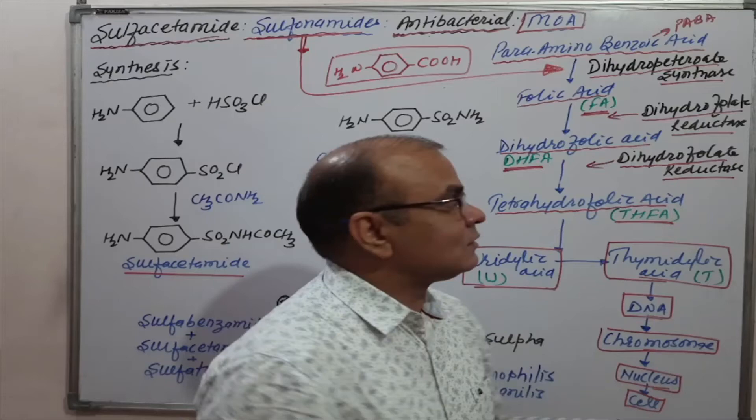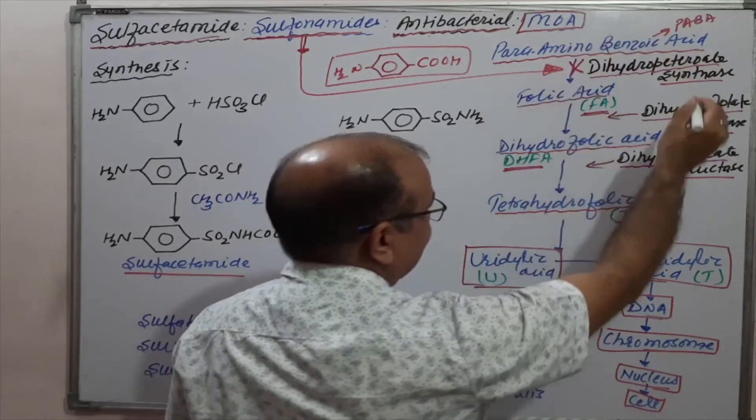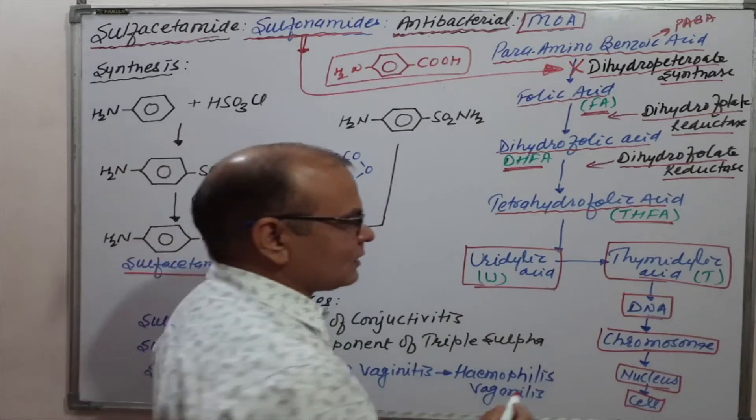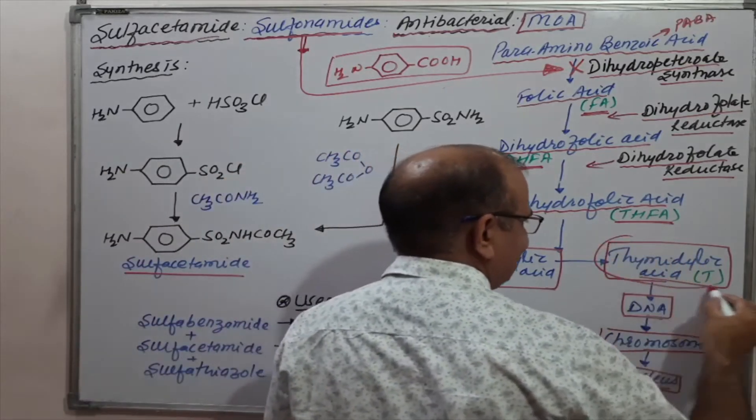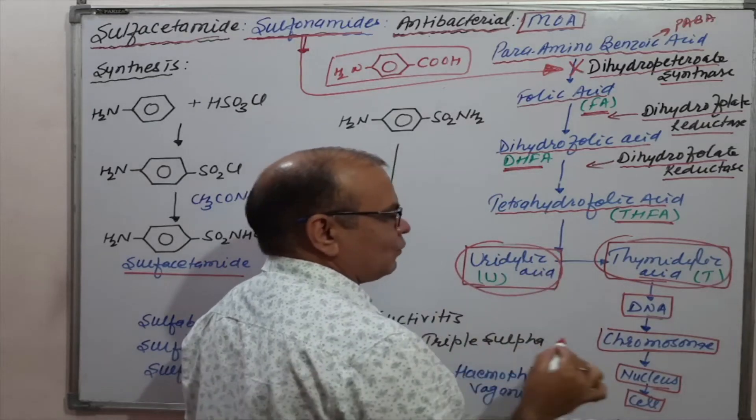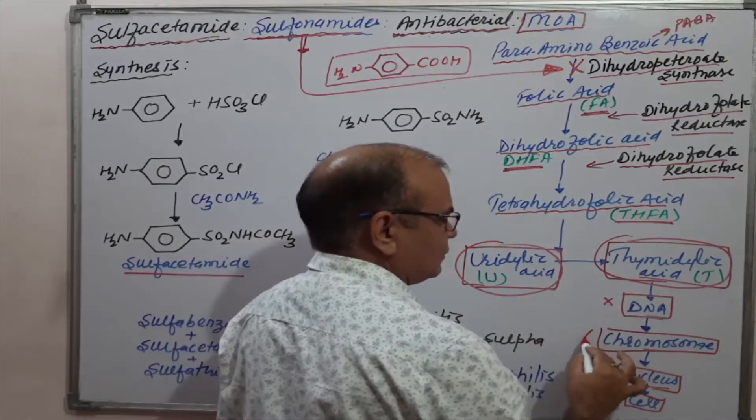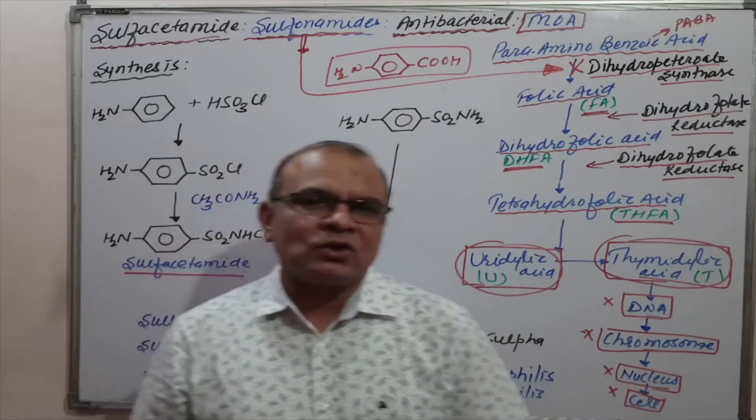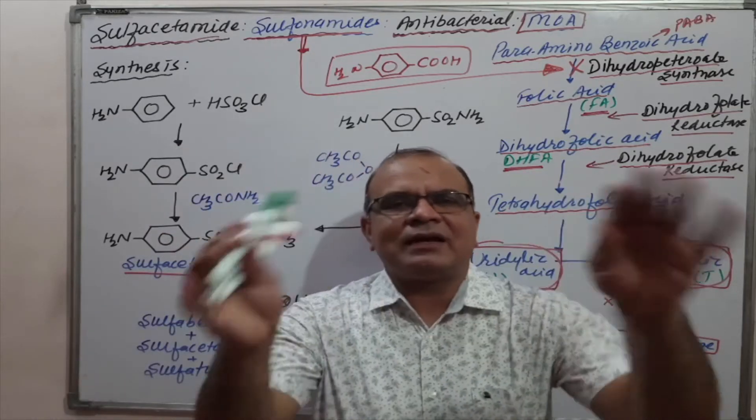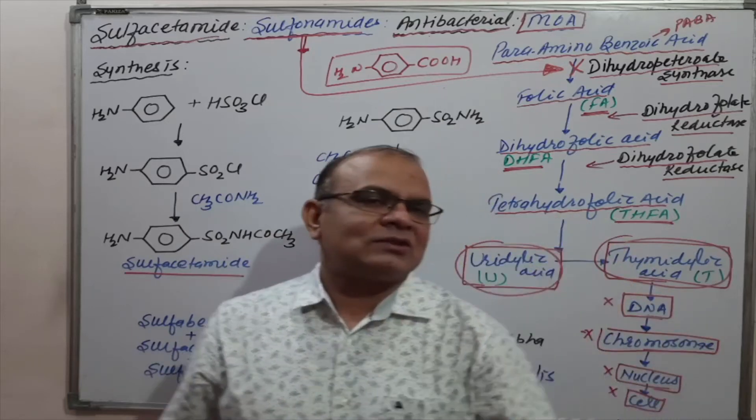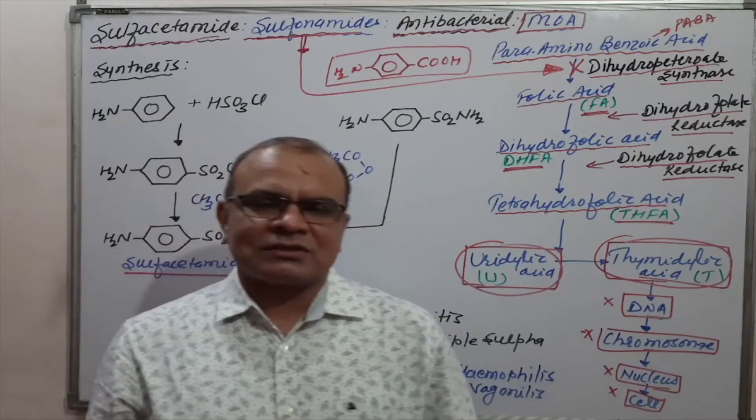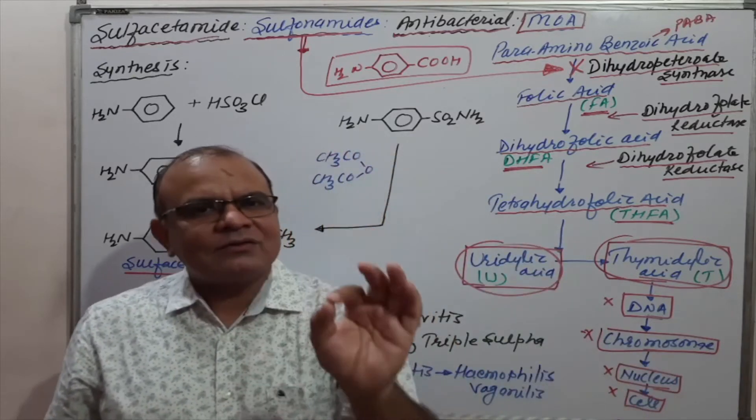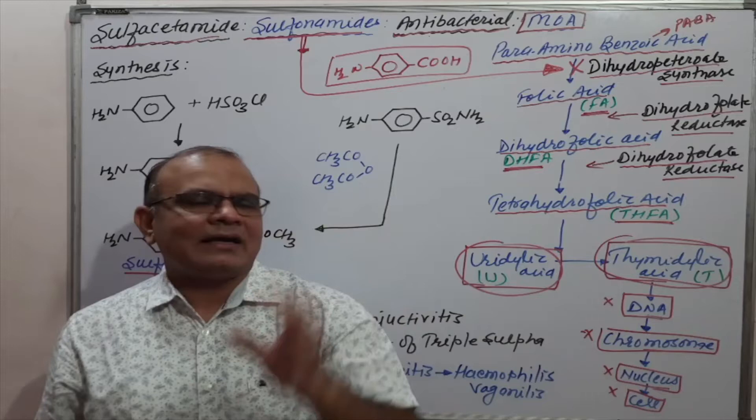In this inhibition, this step is inhibited followed by all subsequent steps, which results in no formation of thymidylic acid from uridylic acid, followed by no DNA synthesis, no chromosome, no nucleus or no cell. This means the bacteria will not grow or multiply. Sulfacetamide in normal dose concentration is bacteriostatic, meaning it inhibits the growth of microorganisms.